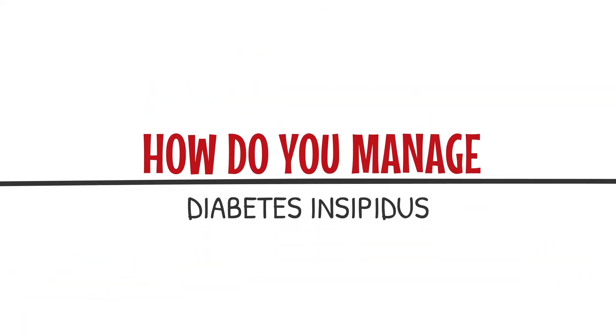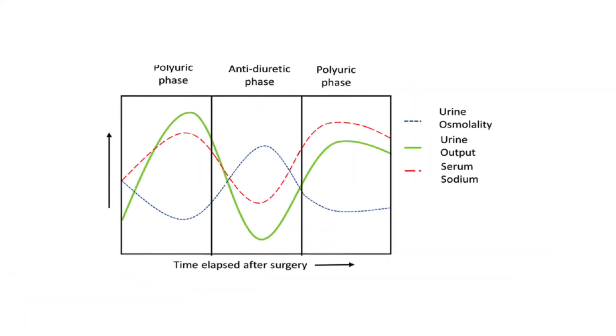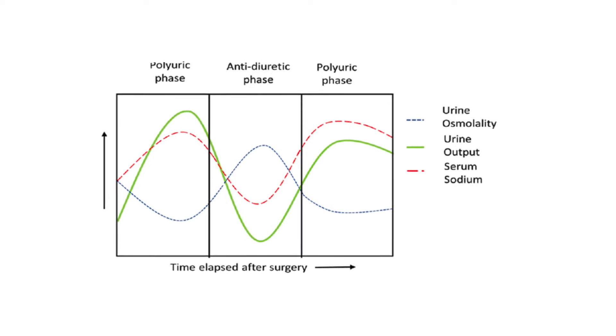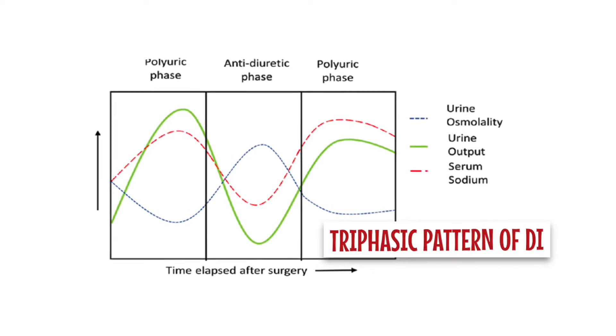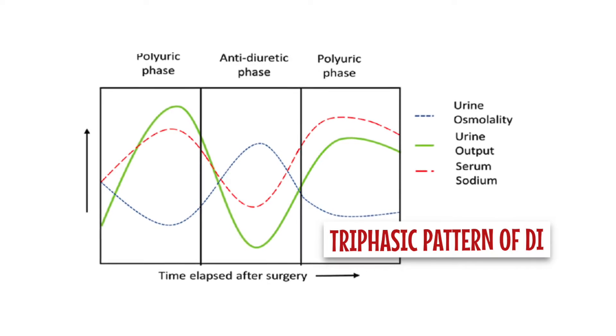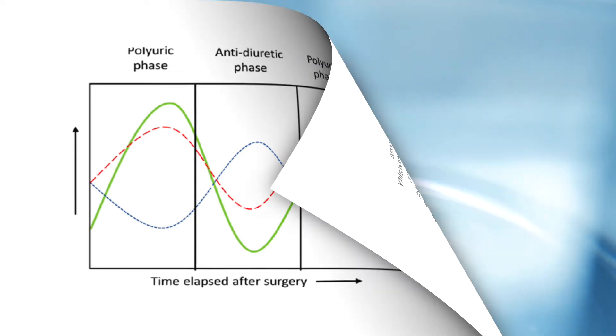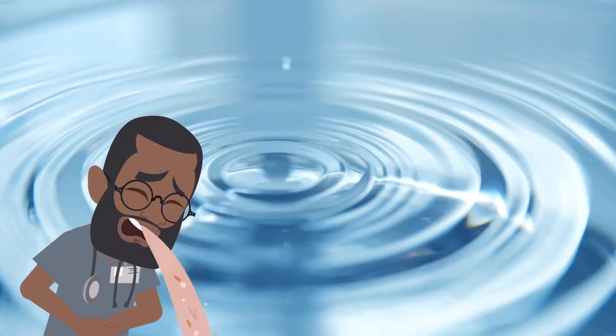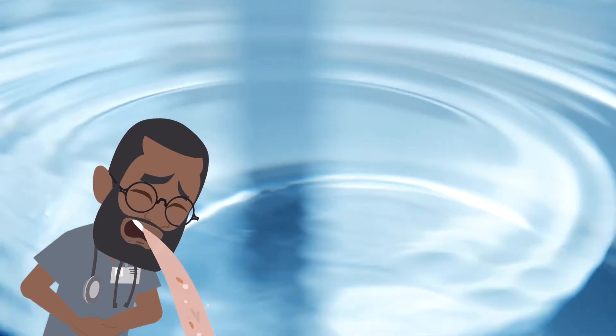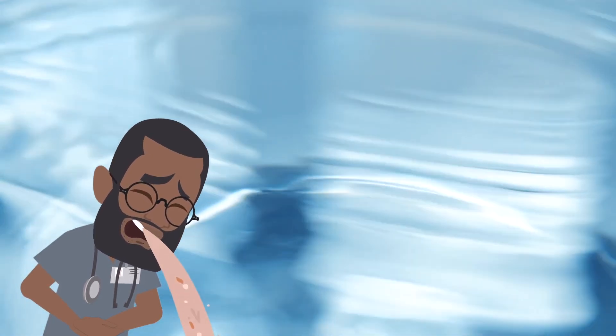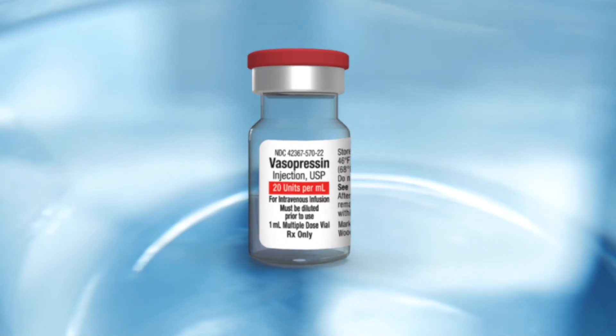Additionally, suspect DI if the serum sodium is more than 148 and the urine specific gravity is less than 1.003. For treatment, there is a triphasic pattern to DI over the first 5 to 10 days post-op. If the patient is awake, have them drink as much free water as they are able to. If they are unable to tolerate orally due to nausea, vomiting, or altered mental status, treat with half normal saline with 20 mEq of potassium chloride. Give desmopressin if sodium is more than 150.